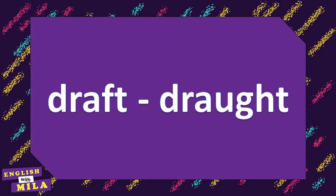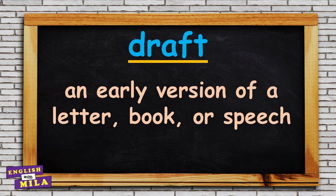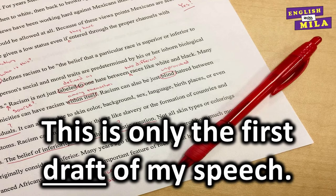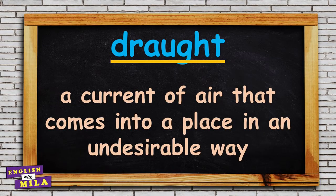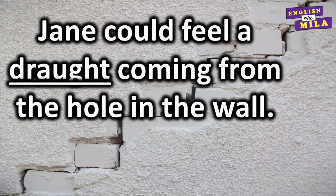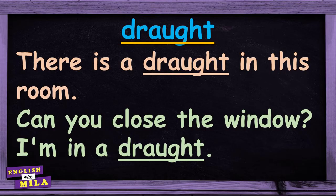Let's move on and learn this pair of homophones: draft / draught. A draft is an earlier version of a letter, book, or speech. For example: 'This is only the first draft of my speech.' 'I read the first draft and thought it was very good.' 'First, do a rough draft of your essay.' And 'draught' is a current of air that comes into a place in an undesirable way — just remember that this is the British spelling of the word. For example: 'Jane could feel a draught coming from the hole in the wall.' 'There is a draught in this room.' 'Can you close the window? I am in a draught.'